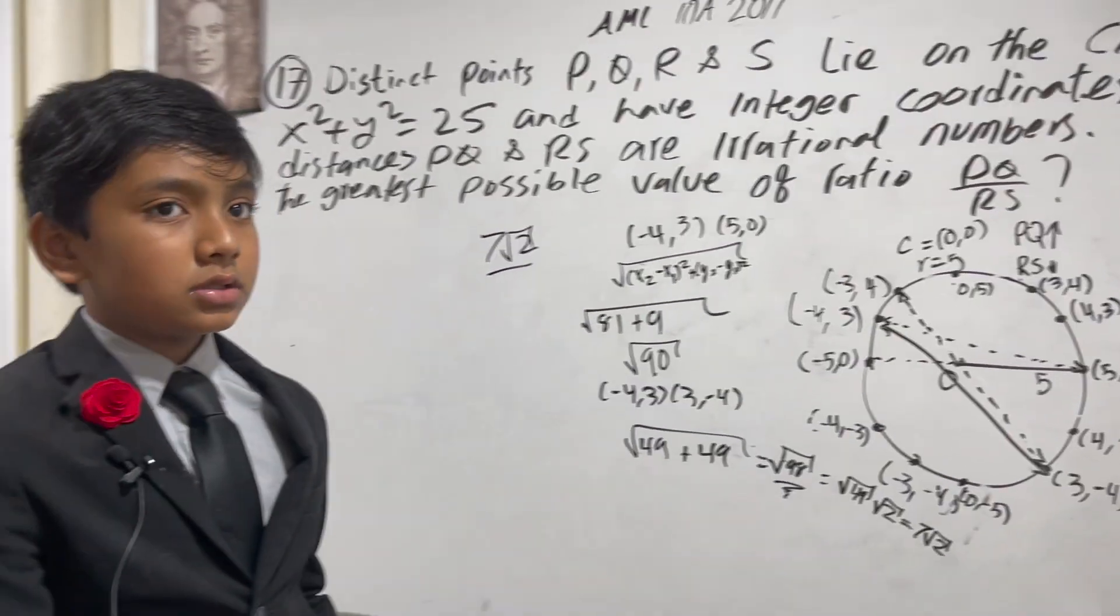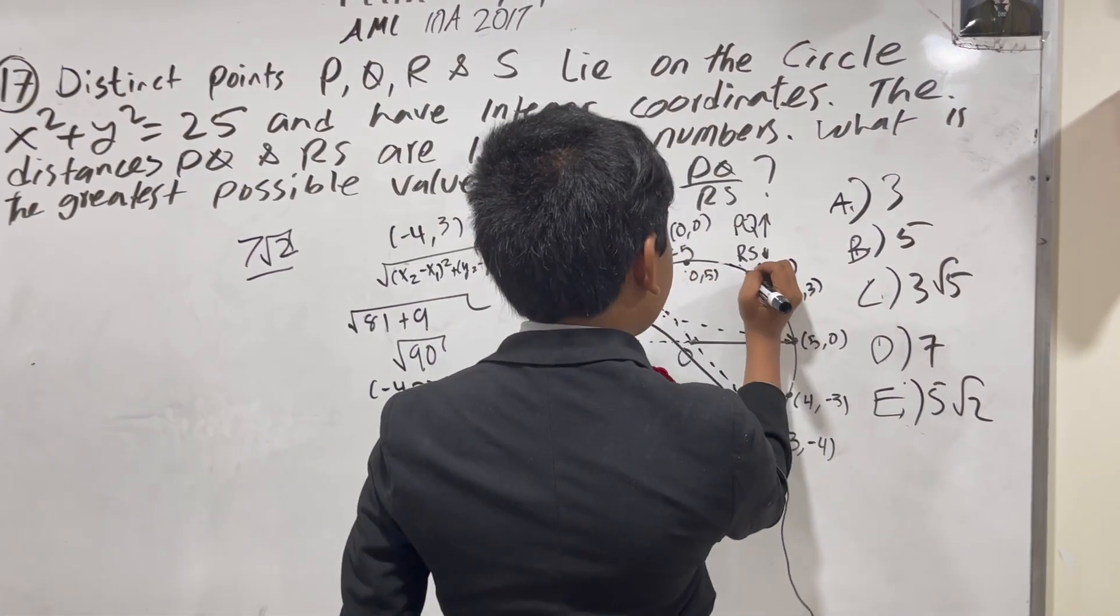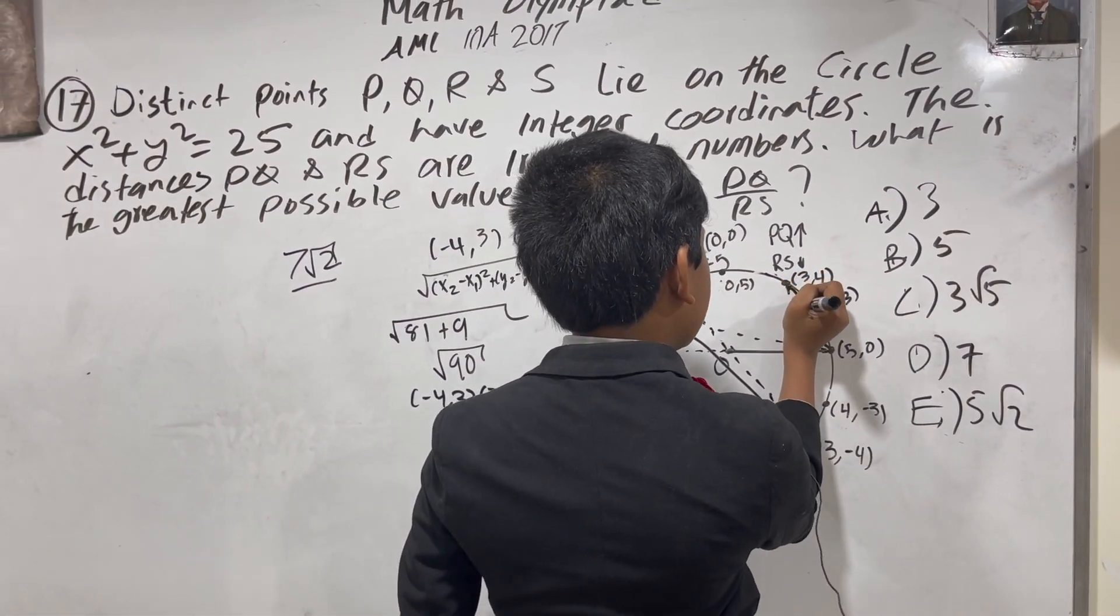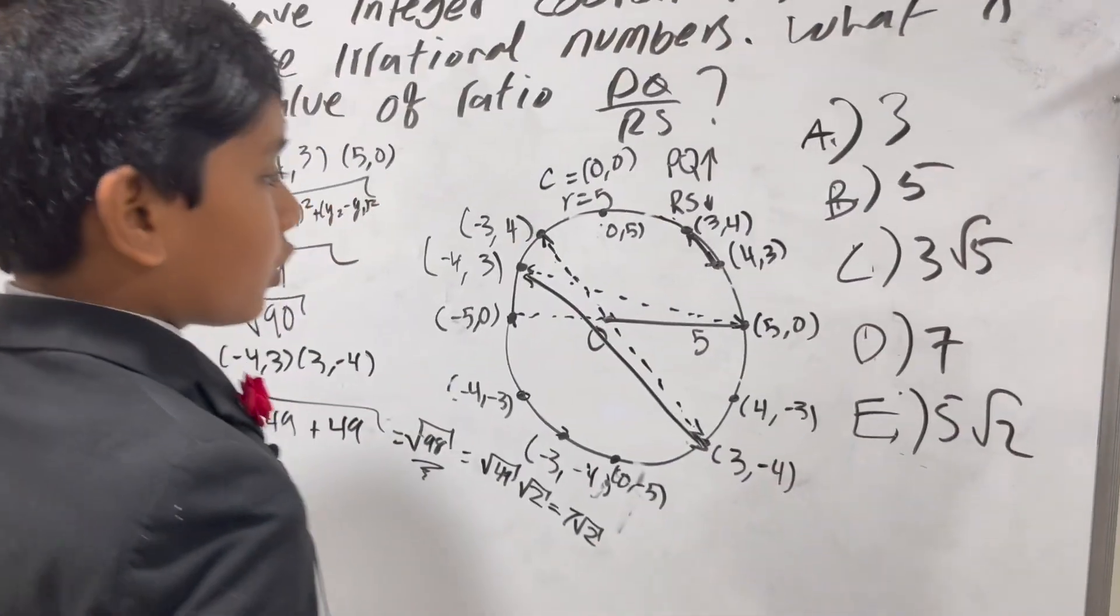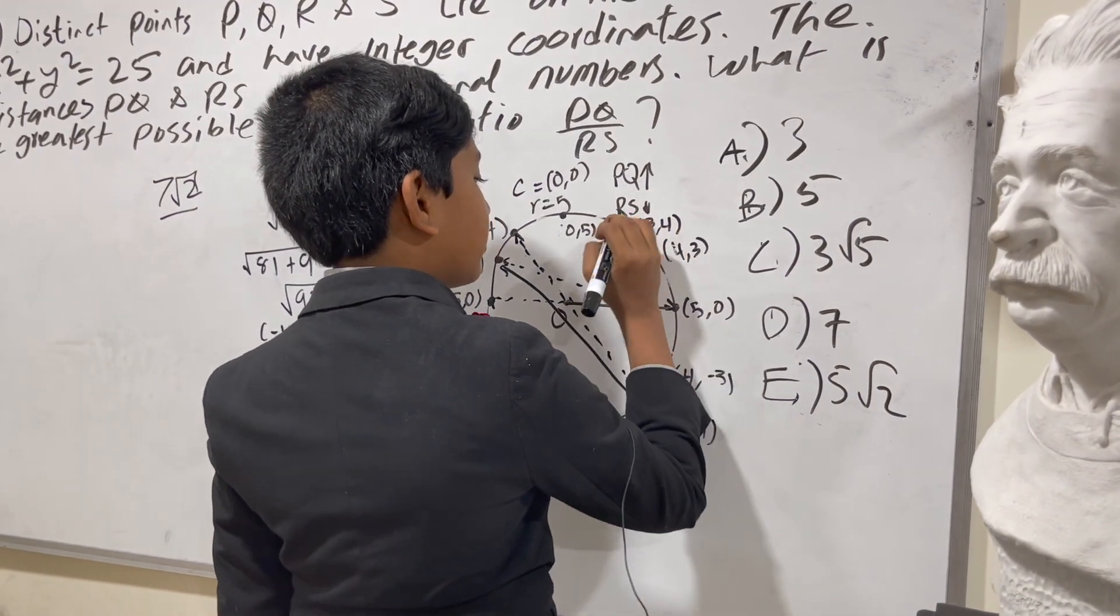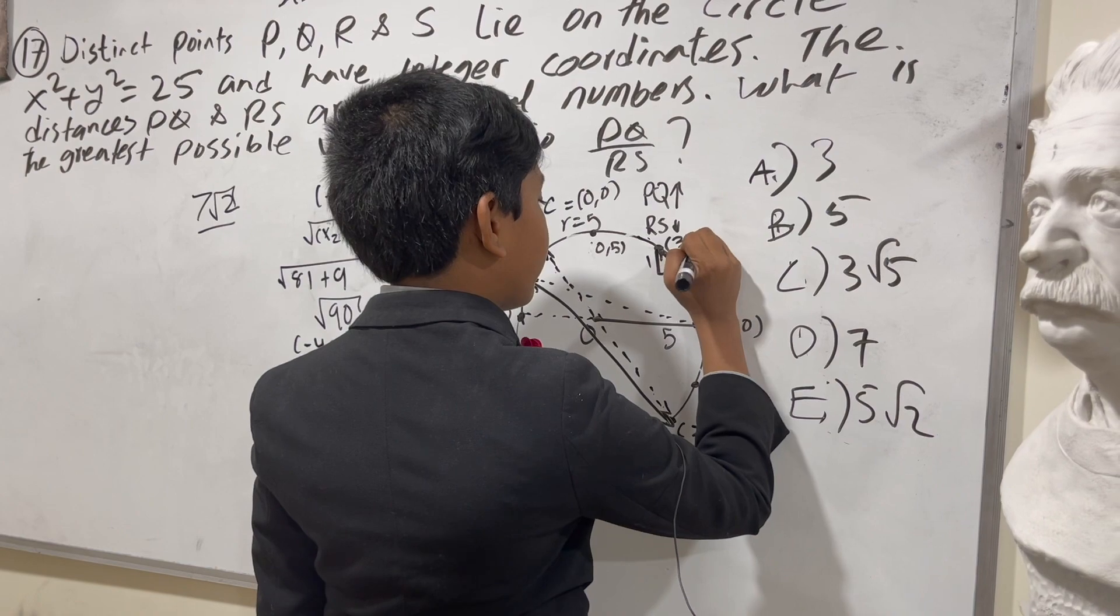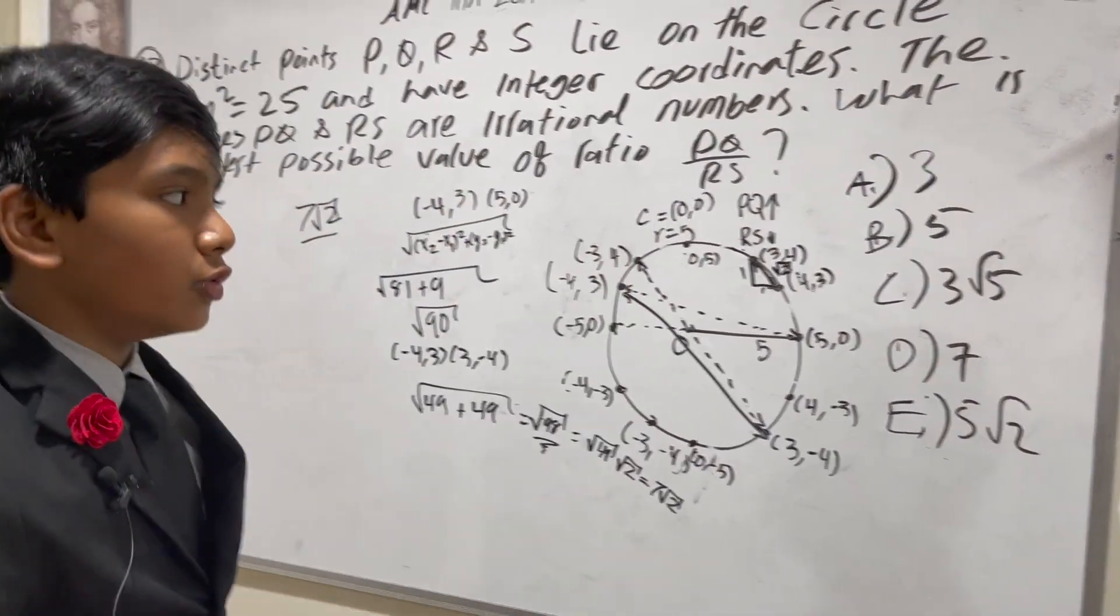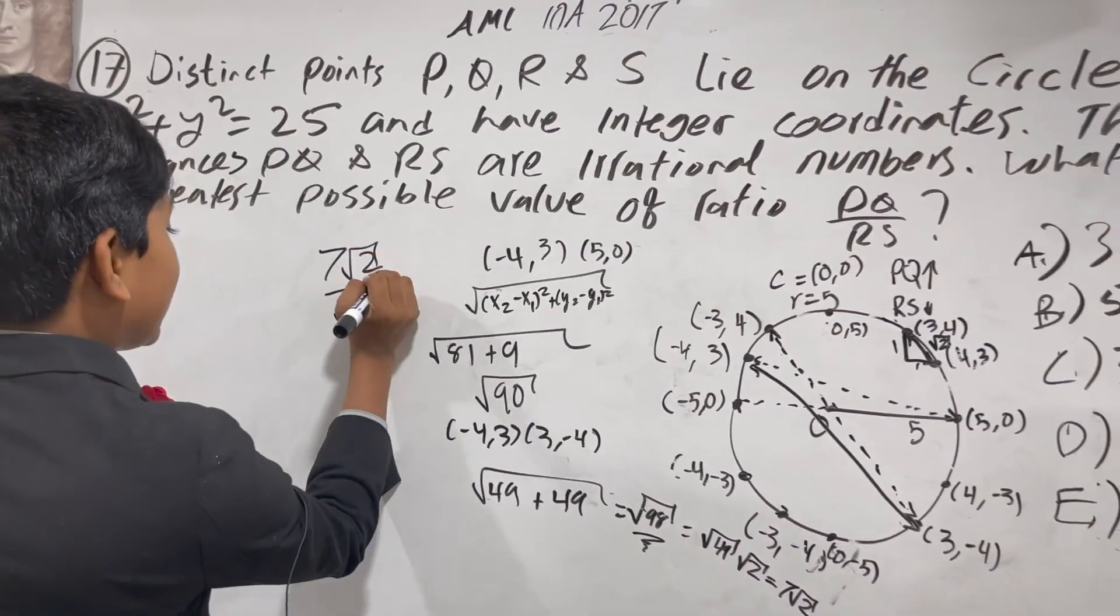What about the lowest possible for RS? Well, the lowest possible would have to be a connection between two of these very close points. For example, (3,4) and (4,3). It's actually really easy to do these because the distances here are 1 and 1, 45-45-90 ratio, root 2. So that means RS's minimum length is root 2.